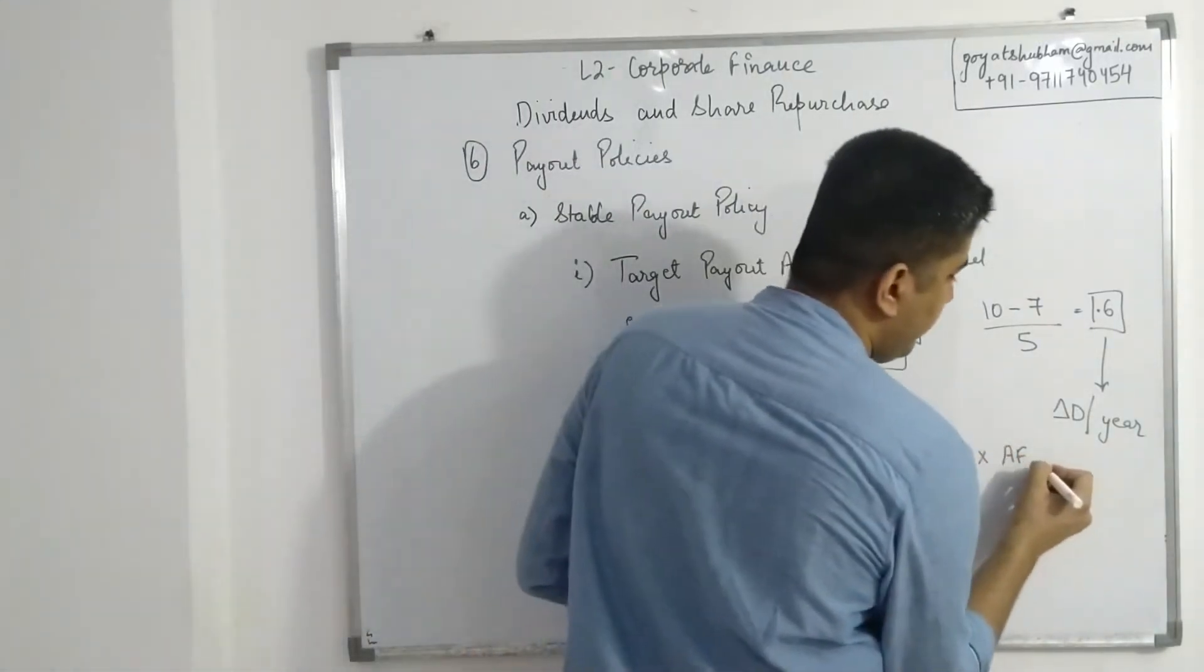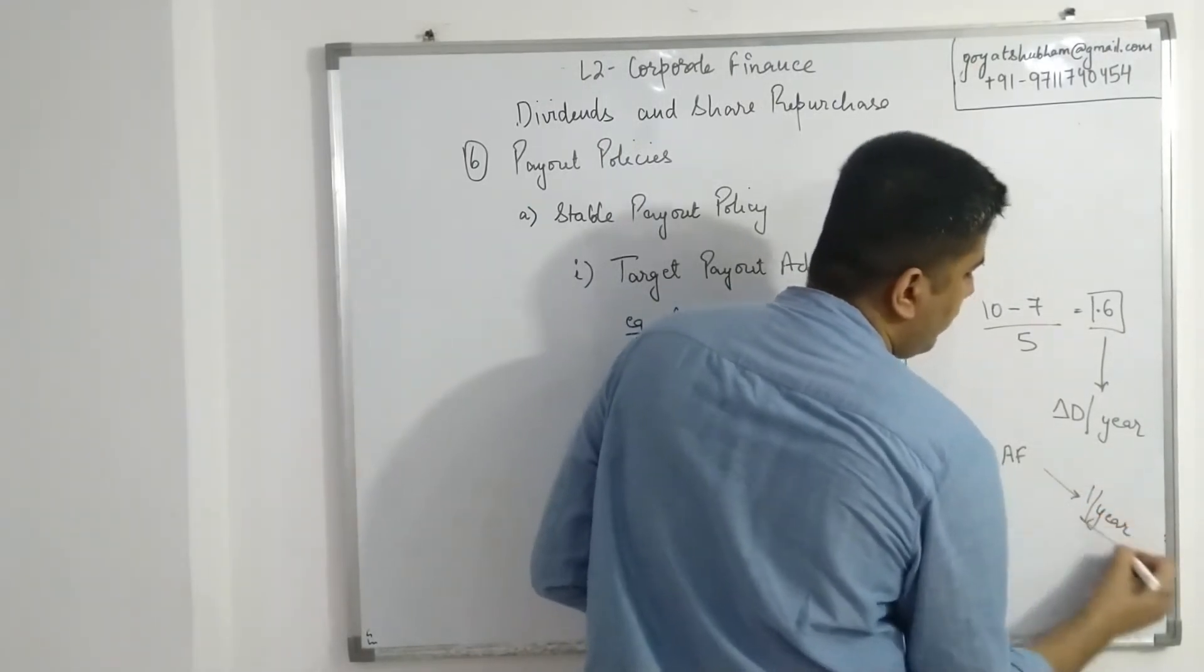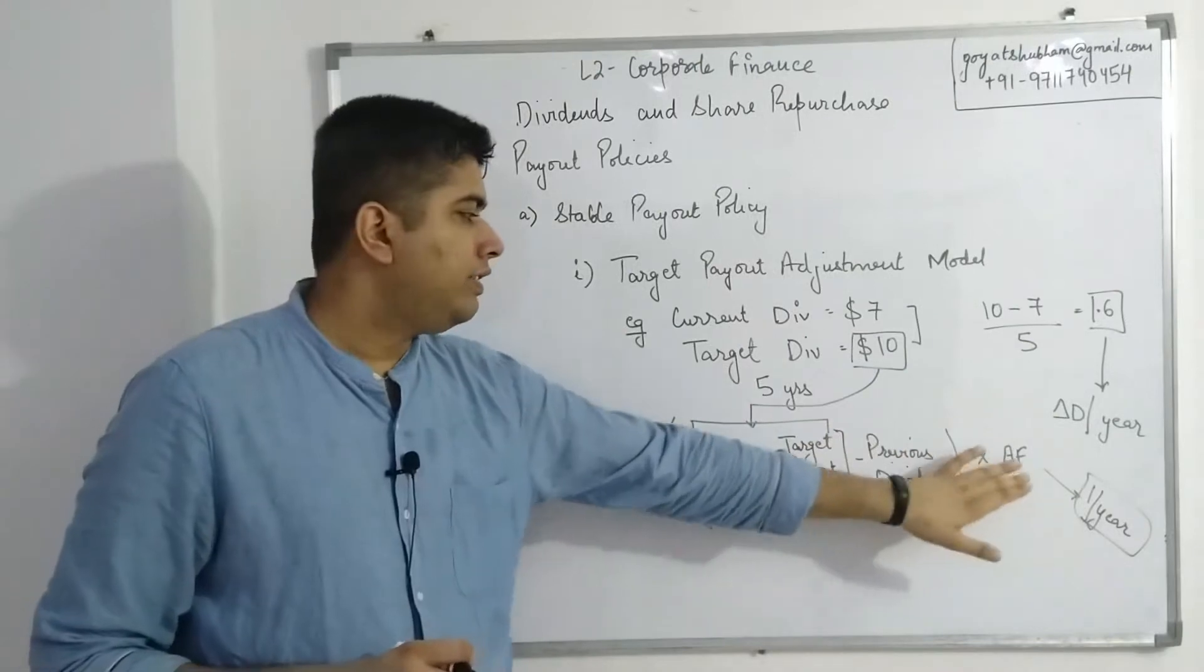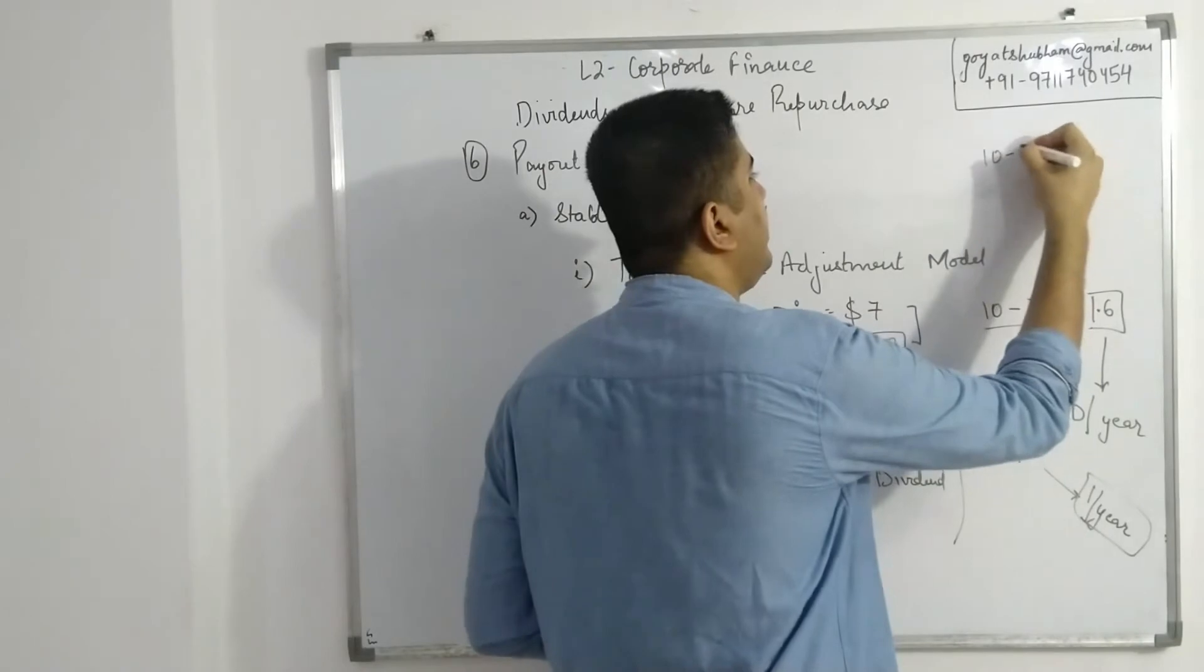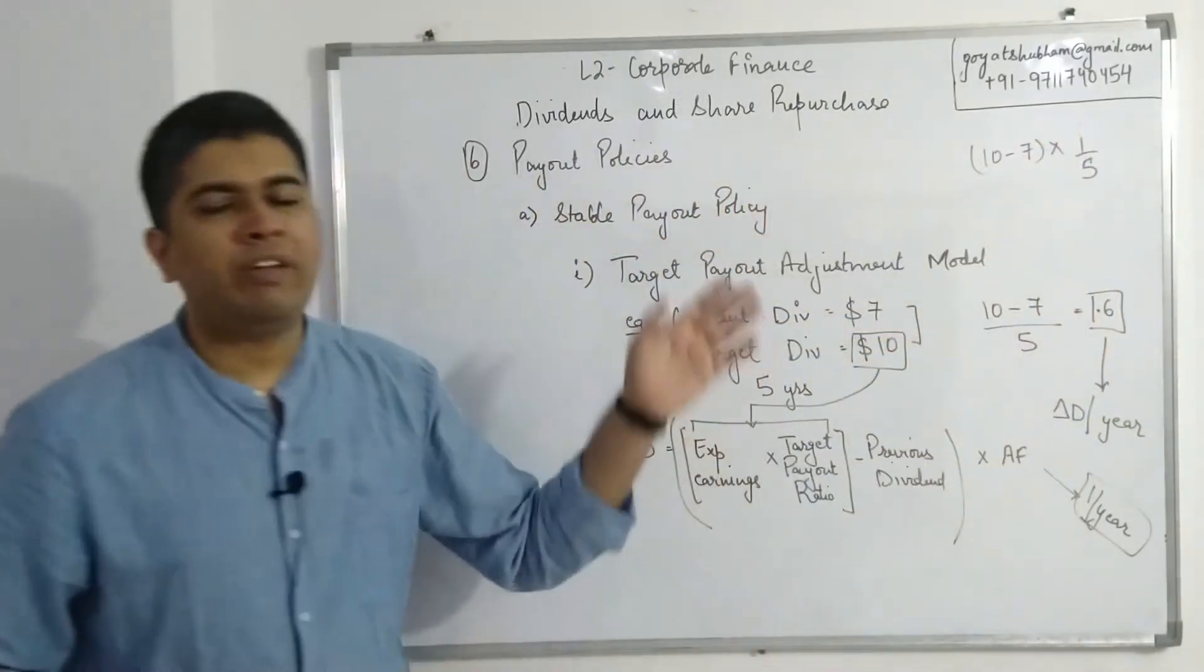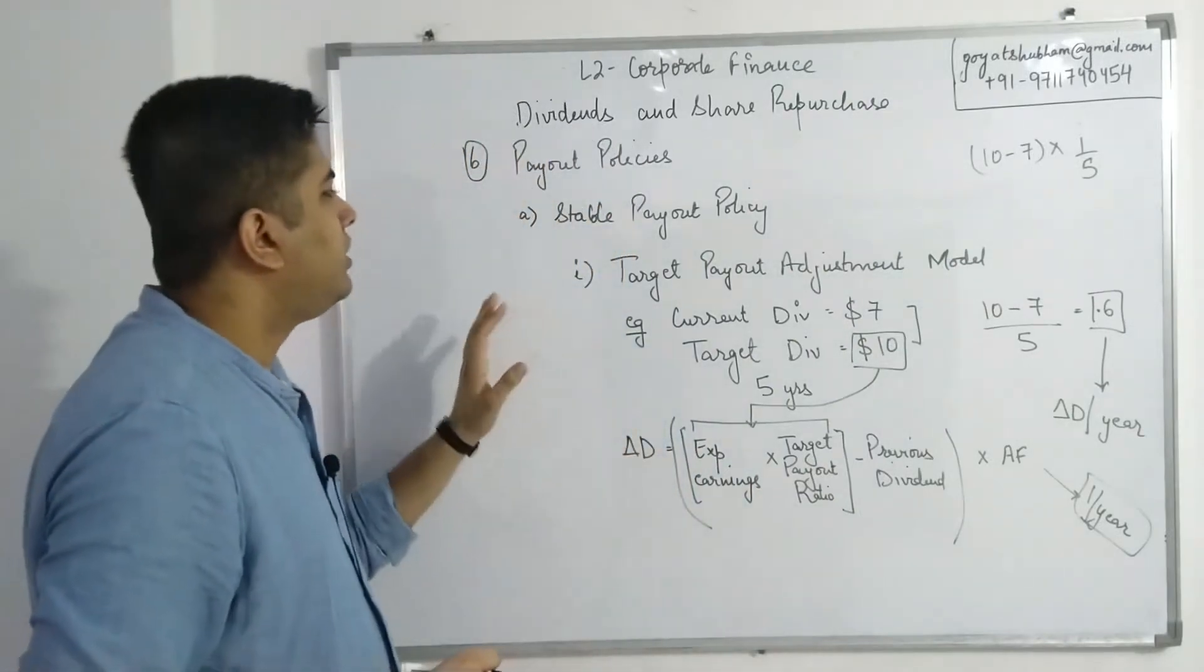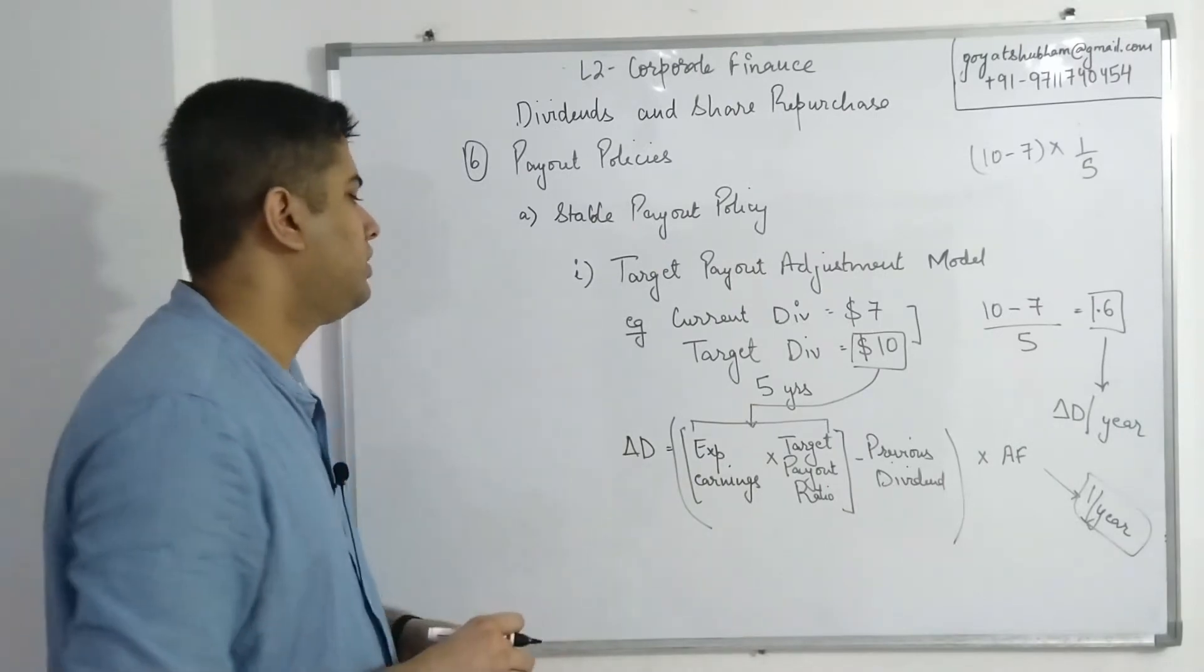Adjustment factor is simply 1 divided by years, the number of years in which you want to make this transition. So adjustment factor in our case was simply 10 minus 7 multiplied by 1/5. This 1/5 becomes my adjustment factor that every year I'll only make 20% of this entire adjustment. So that is our discussion about target payout adjustment model. I hope all of this is clear.